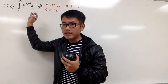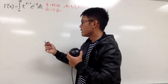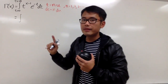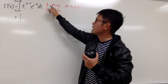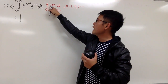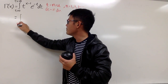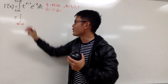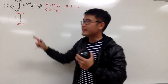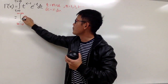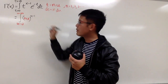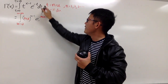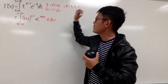Now we'll take this integral from the t-world to the u-world. Originally it was going from 0 to infinity. When t equals 0, divide both sides by n — since n is not 0 — and you get u equals 0 as well. When t is infinity, divide both sides by n, and u goes to infinity as well. So t becomes nu, raised to the x minus 1 power, and e to the negative t becomes e to the negative nu. Then dt is n du.